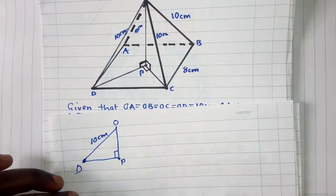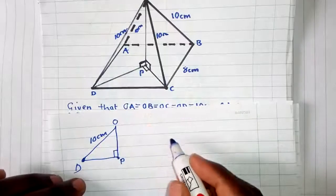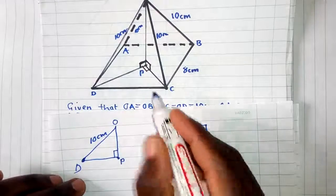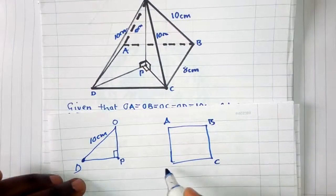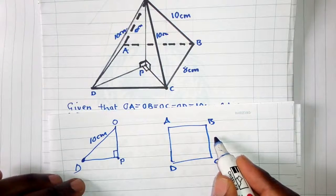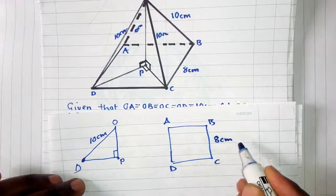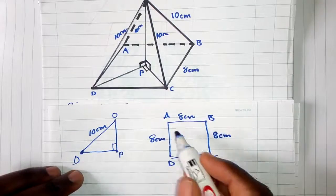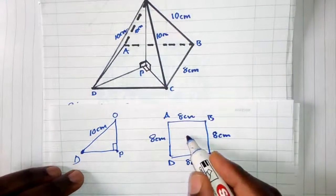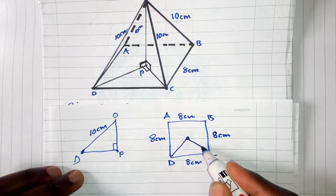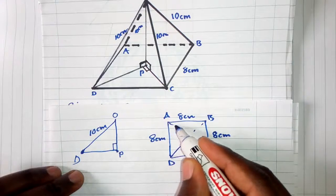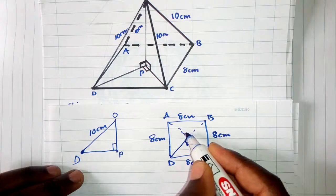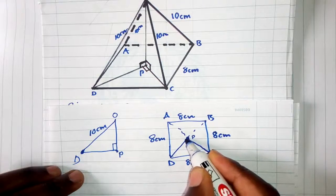To find DP, we look at the base. The base has corners A, B, C, D — it's a square. Each side is 8 centimeters. This is the midpoint O where the diagonals meet, so this is where they are touching at P. At P, this angle is 90 degrees.